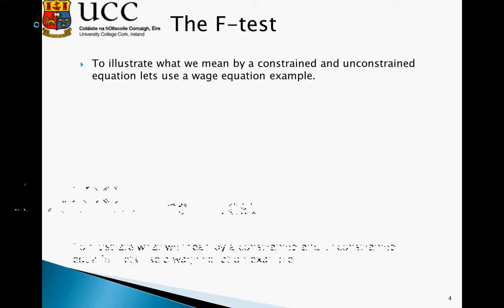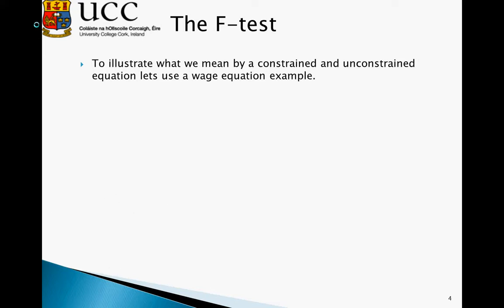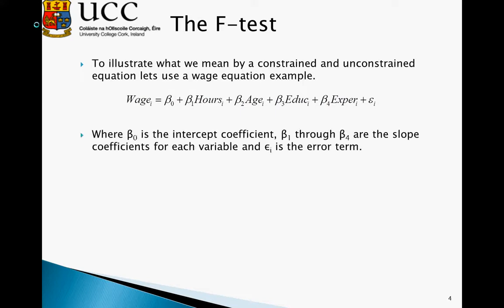To illustrate what we mean by a constrained and unconstrained equation, we're going to use a wage equation example where we say wage depends on hours, age, education, and experience, along with the associated coefficients. We also have an intercept term and an error value. Beta 0 is the intercept, beta 1 through 4 are the slope coefficients, and e is our error term.